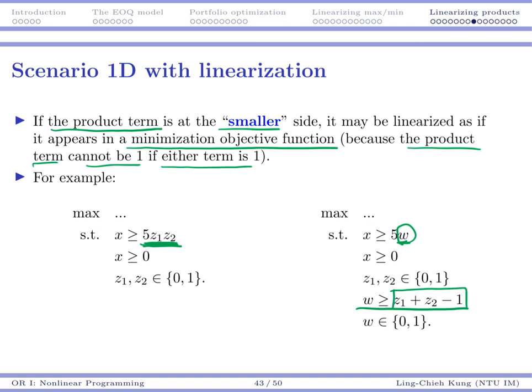So that as long as any of them is 0, then you don't have any restriction on it. But if both of them is 1, then actually your w would be restricted to be 1.